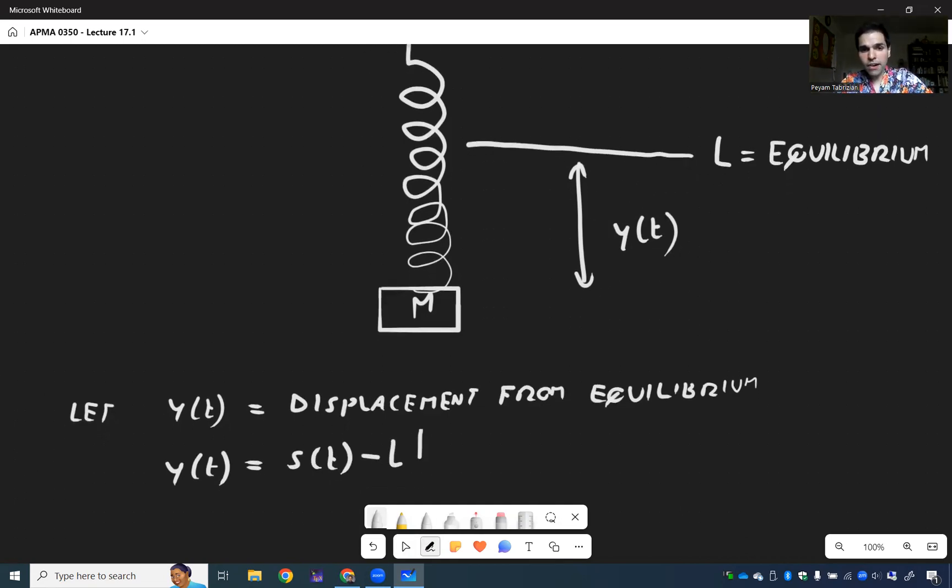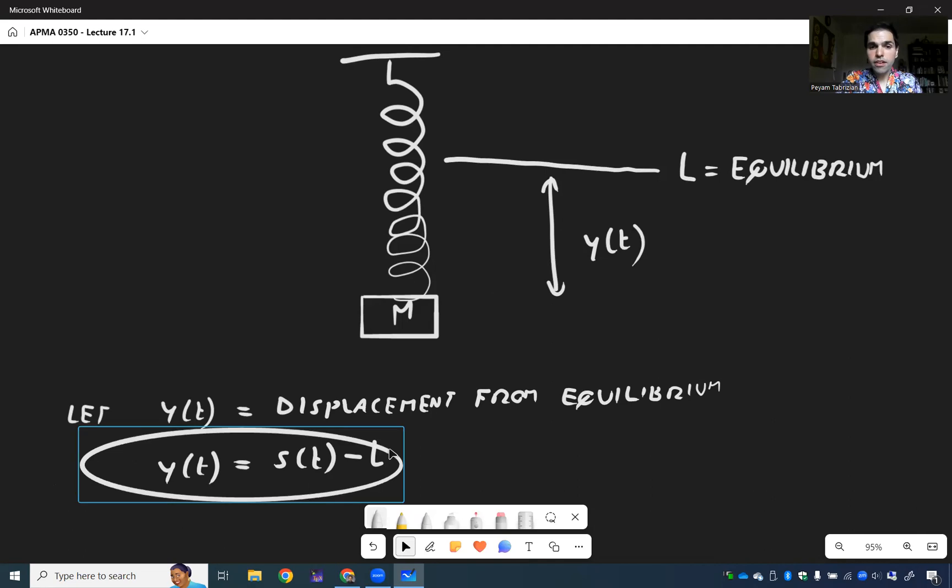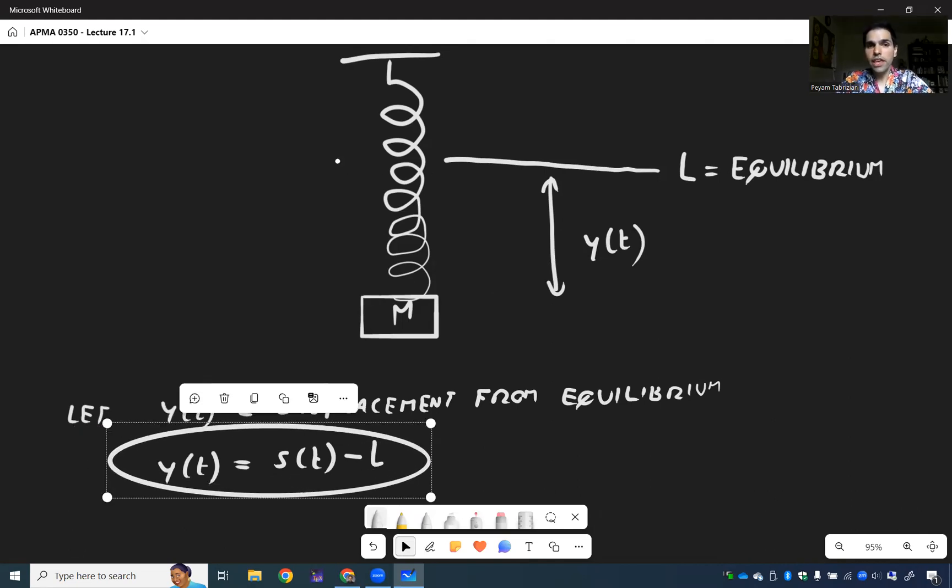And if you think about it, hopefully it makes sense because if the position is at L, so if the mass is at L, then the displacement should be zero. So if S is L, then Y is L minus L, which is zero.